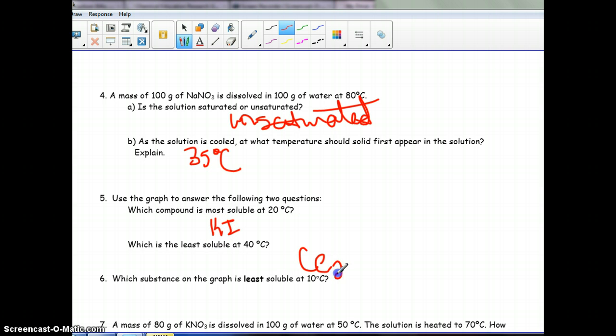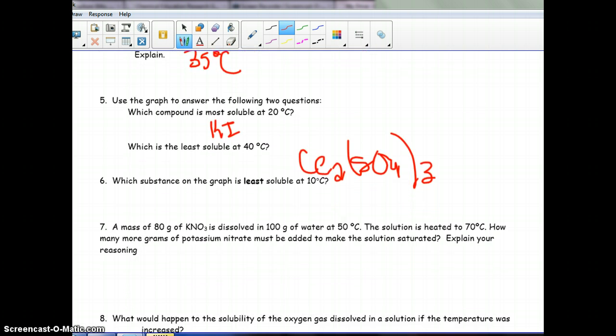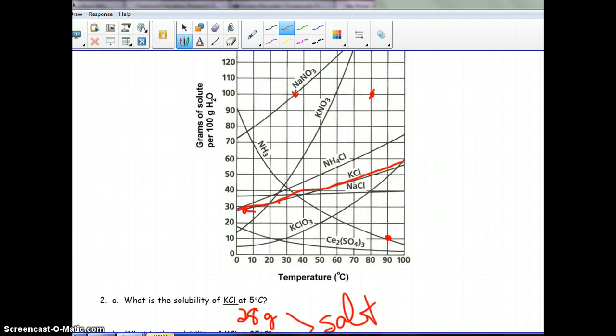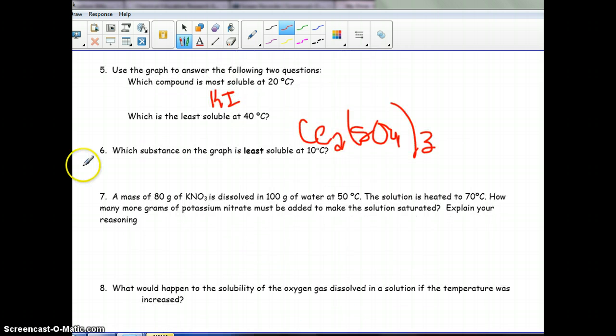Which is least soluble at 10 degrees? Well, let's go look at our 10 degrees. 10 degrees is going to be KClO3. Because that is lower than the CE2 is at that point. So, KClO3, we're the very lowest at 10 degrees.